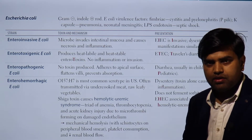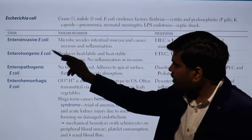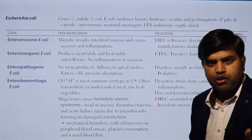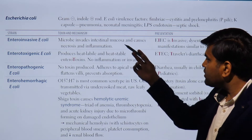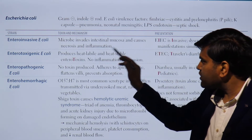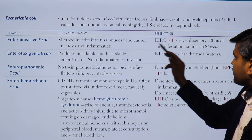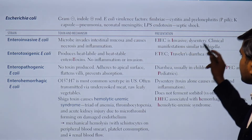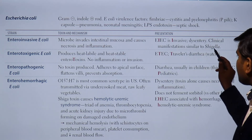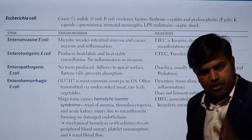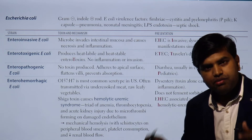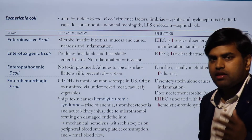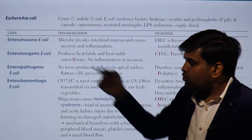Enteroinvasive E. coli, abbreviated EIEC, invades the intestinal mucosa — mainly the large intestine — causing necrosis and inflammation. It causes invasive diarrhea resembling dysentery, with clinical manifestations similar to Shigella. Think of EIEC as causing invasive, bloody diarrhea through invasion and destruction of the large intestinal mucosa.